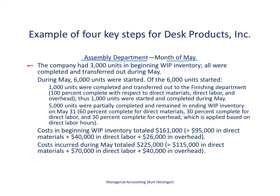These are units that are not completed yet, but during May they were all completed and transferred out into the finishing department. Then during May, we started 6,000 units. Of those 6,000 units that were started, we completed and transferred out 1,000 of those units — completely done with regards to direct materials, direct labor, and overhead. Then we had 5,000 units remaining that were still partially completed in work in process at the end of May, at varying levels of completion: 60% for direct materials, 30% for direct labor, and 30% for overhead.